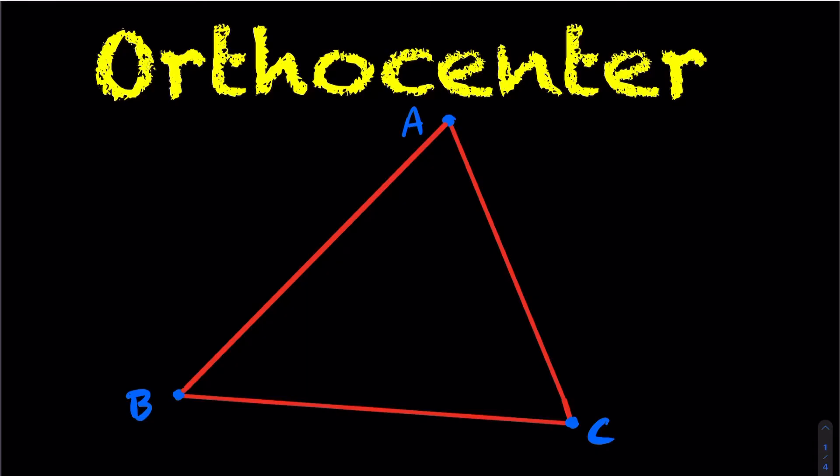We're going to take a look at this idea of the orthocenter. The orthocenter is the intersection of your altitude lines. Every triangle has three different altitude lines. The altitude line is just the height of your triangle. If you need that video, it'll be linked in the top right.